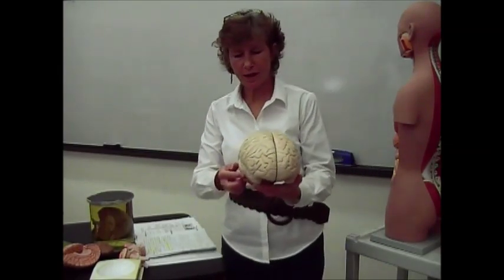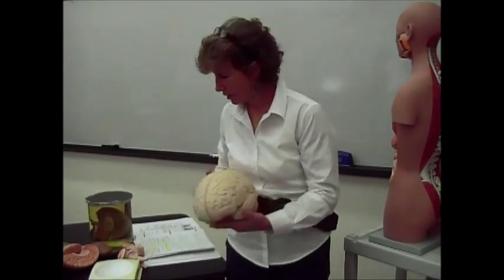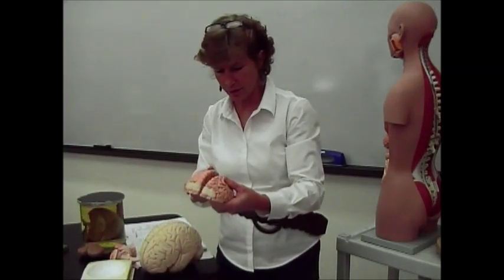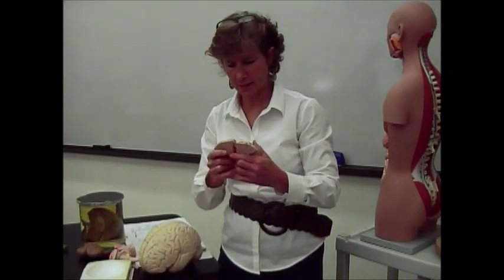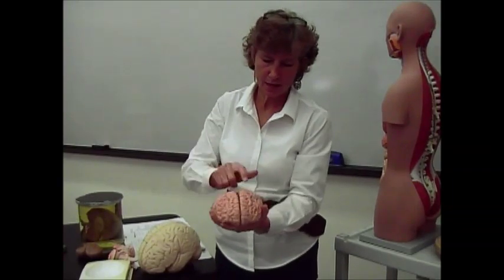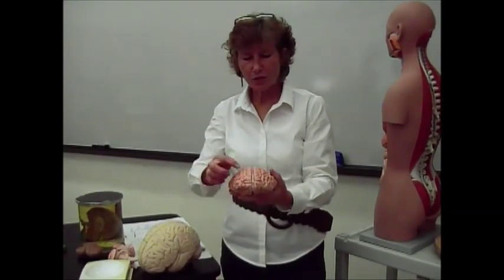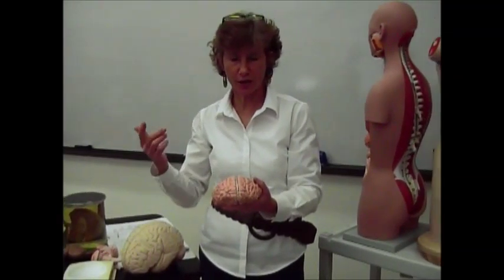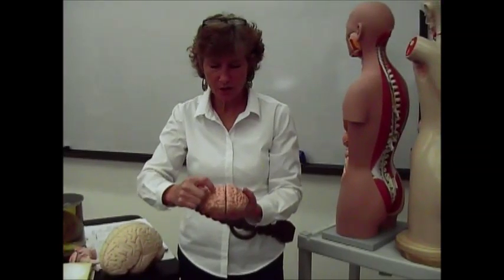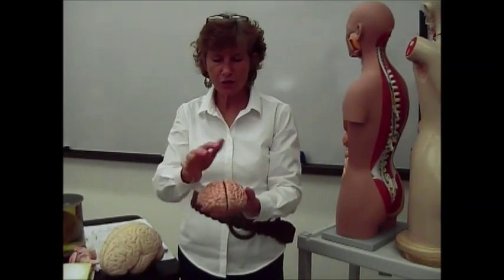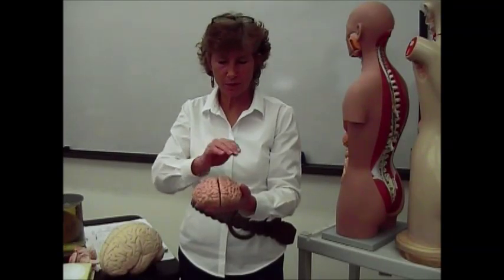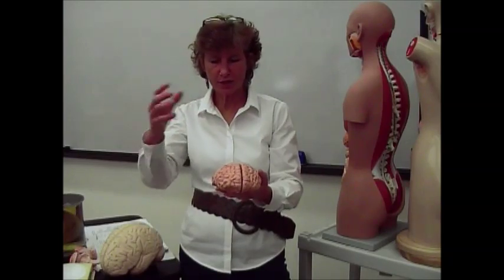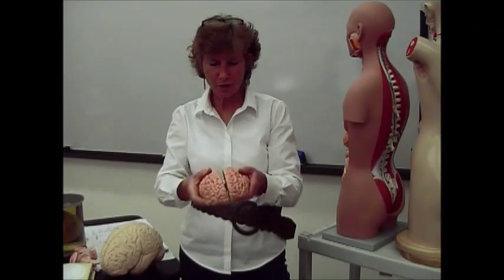You also have bumps and valleys on the surface of the brain. These little hills are called gyri — that's the plural; one would be called a gyrus. These little valleys are called sulci. All this surface area created by these bumps and valleys allows more neurons to make connections.